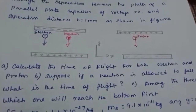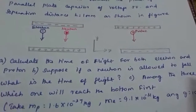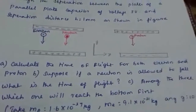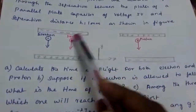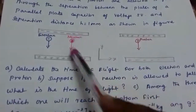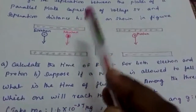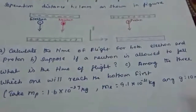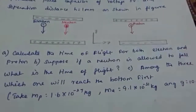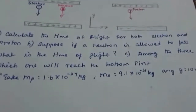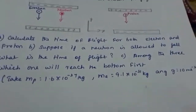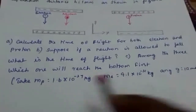Suppose a neutron is also allowed to fall — we have to find out the time of flight for the neutron as well. Among the three — electron, proton, and neutron — which one will reach the bottom first?